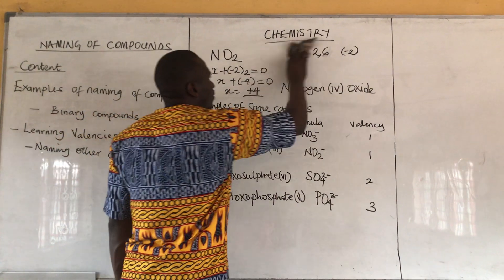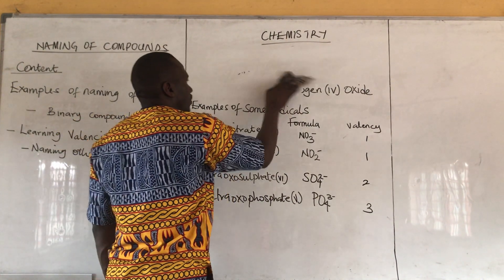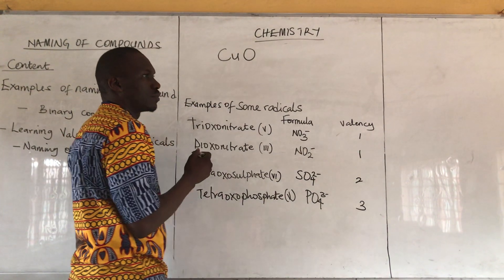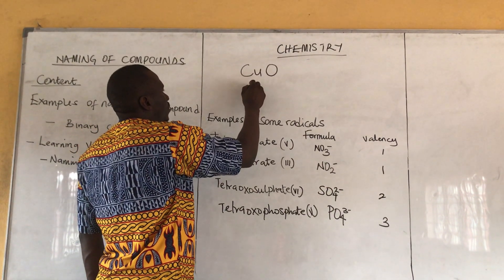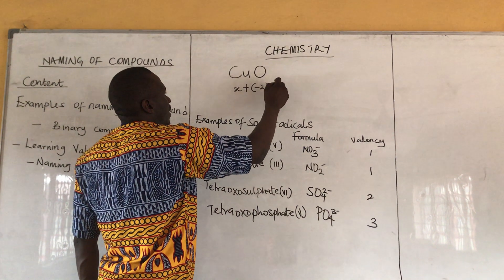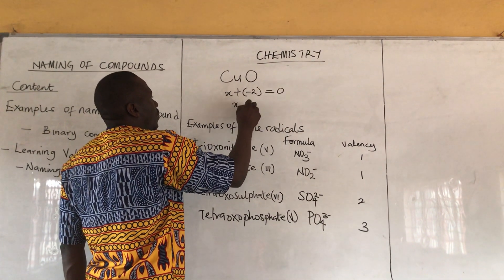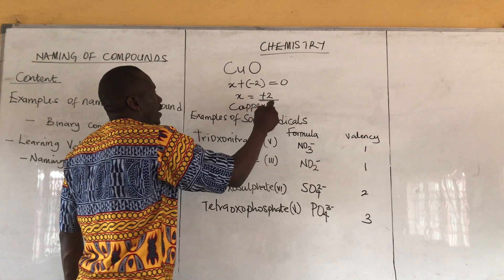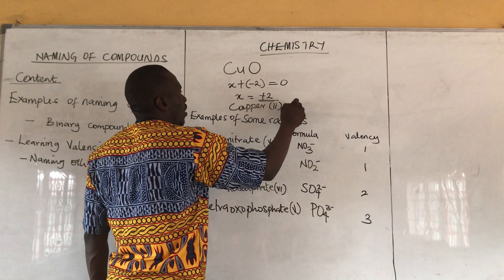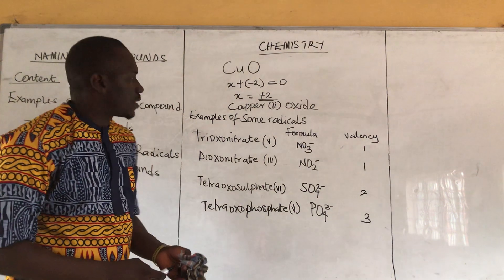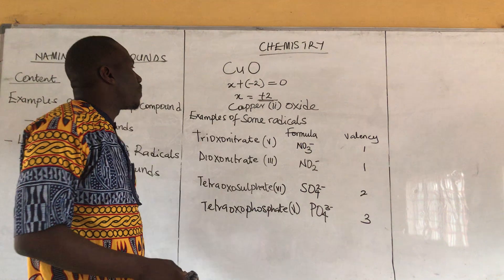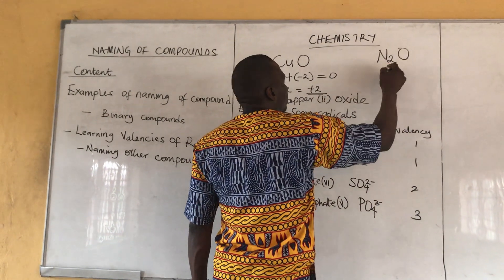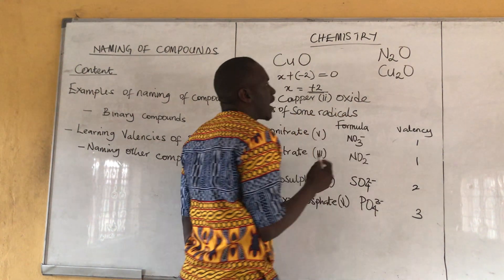Let's see another example: CuO — copper oxide. Copper here is unknown, plus oxygen (minus 2) equals zero. X equals plus 2. This compound becomes Copper(2) oxide. The oxidation state of copper in this compound is 2. On your own at home, you can try some examples and drop your answers in the comment section.